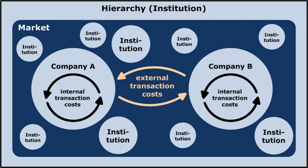Coase notes that a firm's interactions with the market may not be under its control — for instance because of sales taxes — but its internal allocation of resources are. Within a firm, market transactions are eliminated and in place of the complicated market structure with exchange transactions is substituted the entrepreneur, who directs production. He asks why alternative methods of production, such as the price mechanism and economic planning, could not either achieve all production, so that either firms use internal prices for all their production, or one big firm runs the entire economy. Coase begins from the standpoint that markets could in theory carry out all production, and that what needs to be explained is the existence of the firm, with its distinguishing mark of the supersession of the price mechanism.